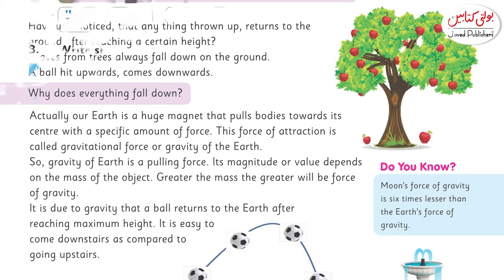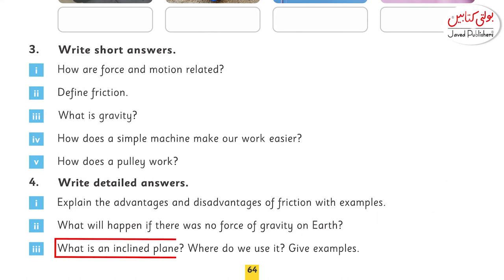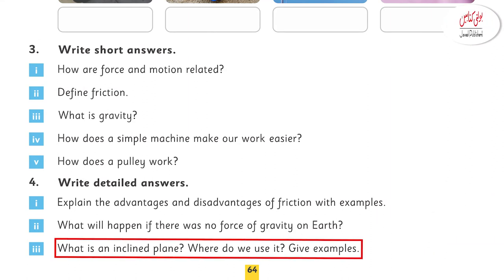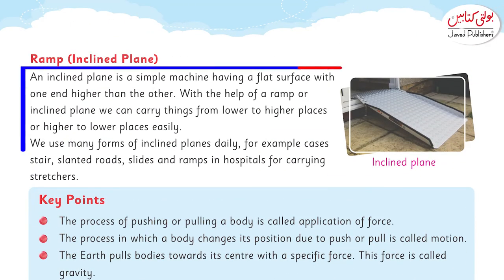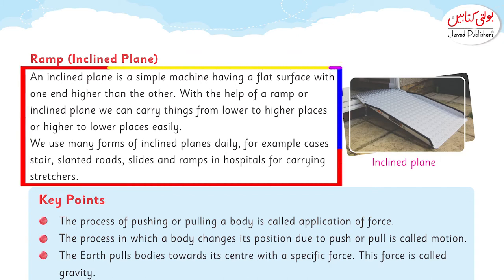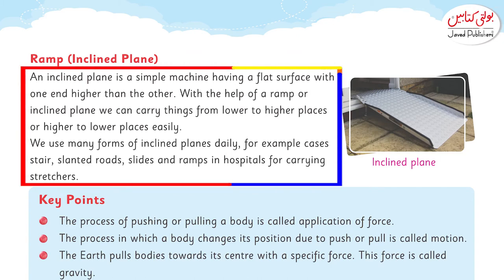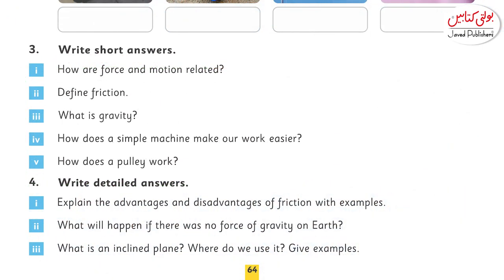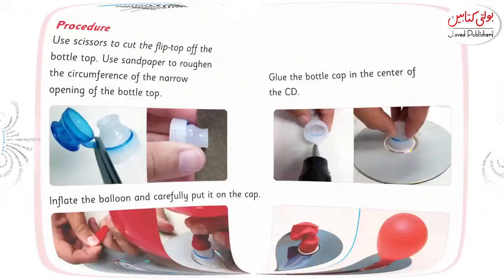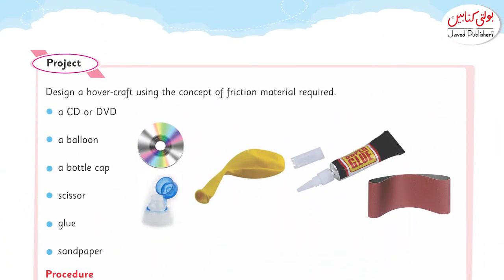The last question: what is an inclined plane, how do we use it, and give an example? You can easily find the answer on page number 63 — the first two lines explain what an inclined plane is, the next three lines cover where we use it, and the next paragraph gives examples. This covers all the question answers. Now move on to page number 65 where they have given you a project.